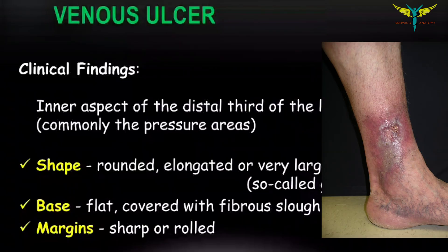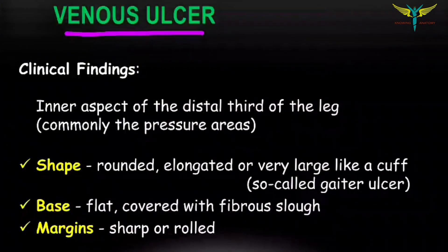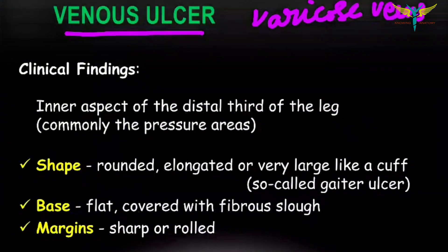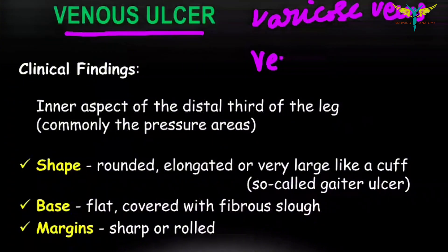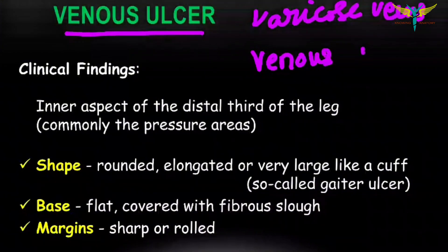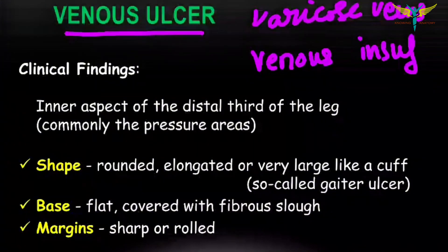In this video, let's learn about the venous ulcer. Venous ulcer is found in cases of varicose veins or problems with venous insufficiency in the lower limb. Coming to the clinical findings, the venous ulcer is usually found in the gaiter zone.